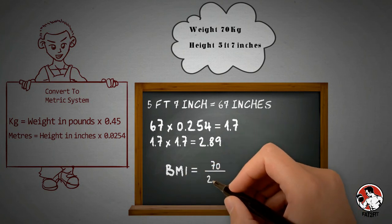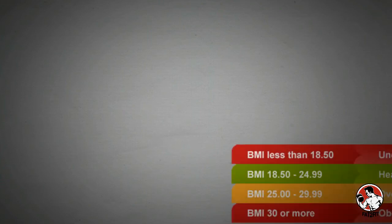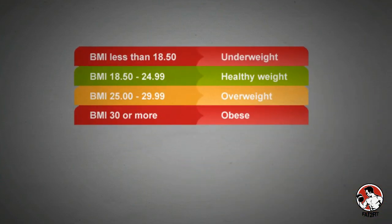So if you divide 70 by 2.89, you finally get 24.22. This is a healthy BMI and we have already explained these details in our previous video.